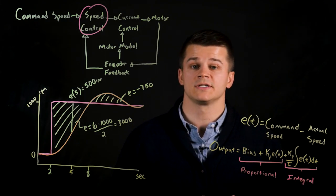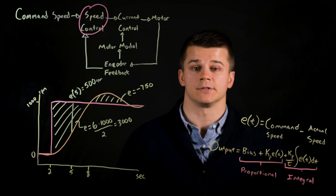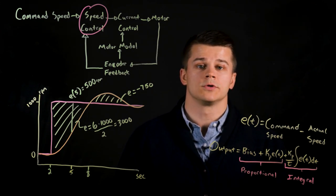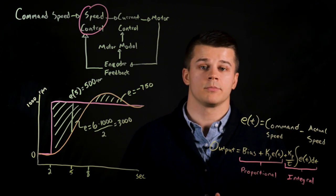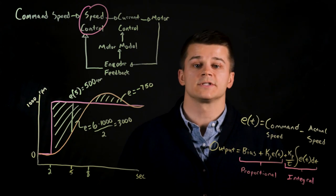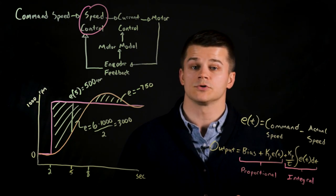The PI controller is a robust yet fast responding closed-loop system. This allows the drive, by only adjusting two parameters, to achieve fast acting response to error between the command and actual speed while also adjusting for long-term error in the system. This allows the drive to achieve precise speed control of a motor.